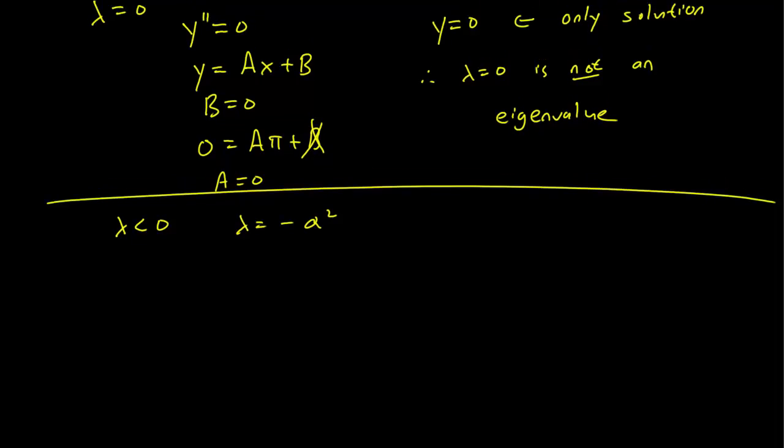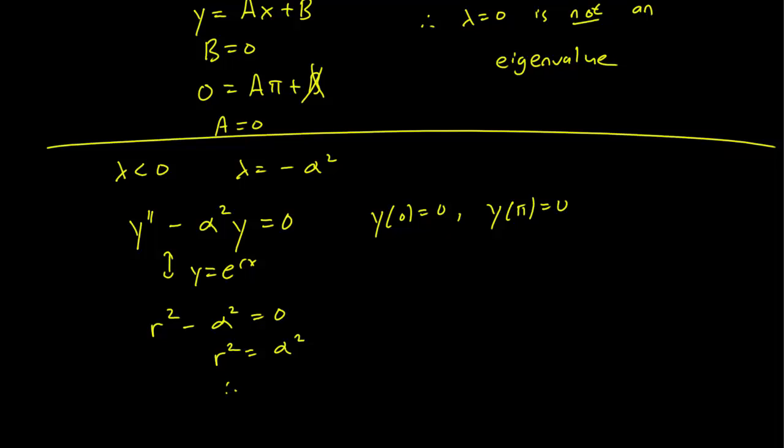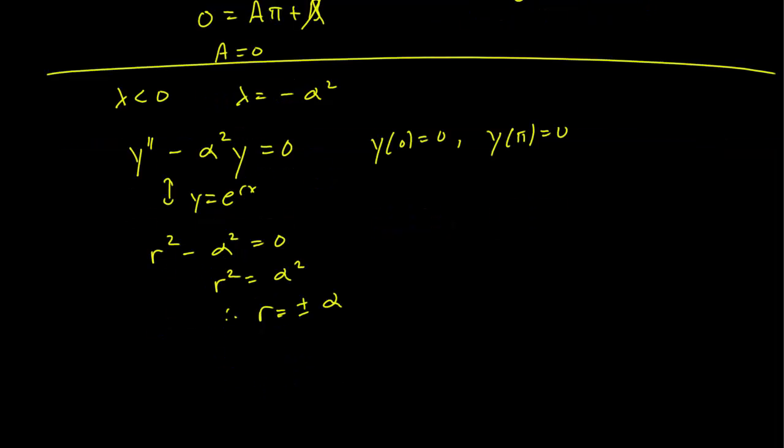We have lambda negative and lambda equals minus alpha squared. So we can rewrite our equation as y double prime minus alpha squared y equals zero, and the same initial conditions of course. So we make our usual substitution here, and this gets us r squared minus alpha squared equals zero. So r squared is equal to alpha squared. This implies that r is going to be plus minus alpha. This is a real root, so our general solution is just going to be c₁e^(αx) plus c₂e^(-αx).